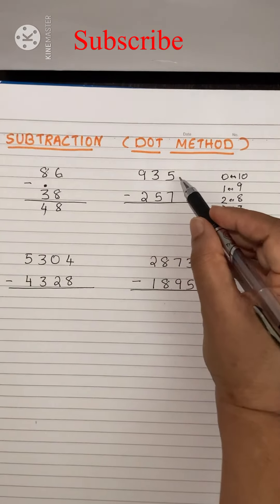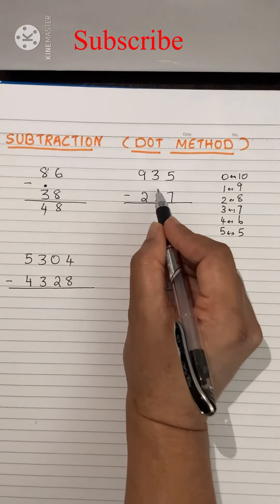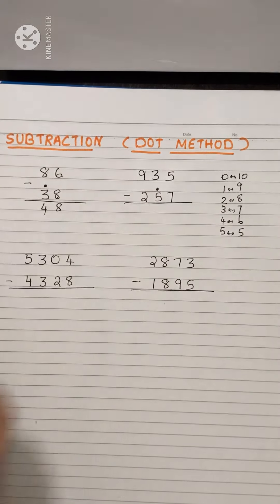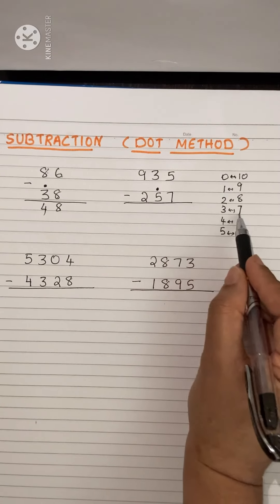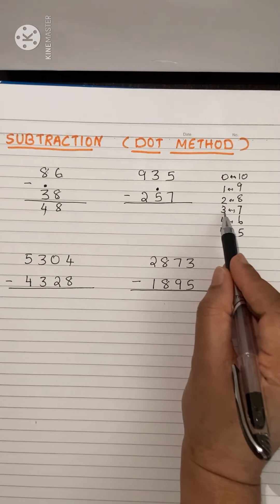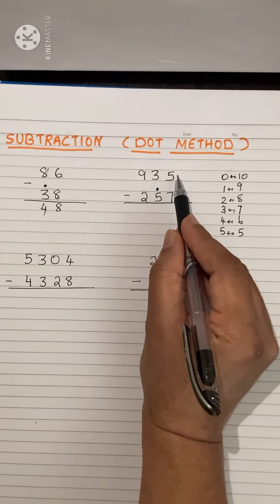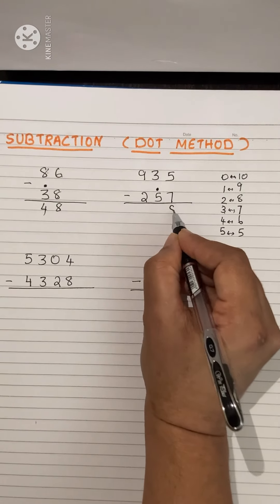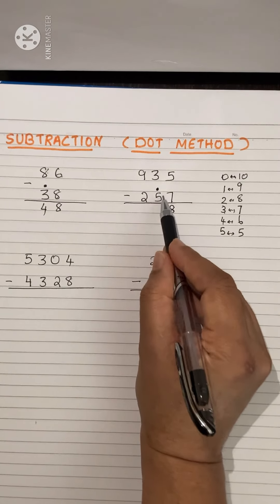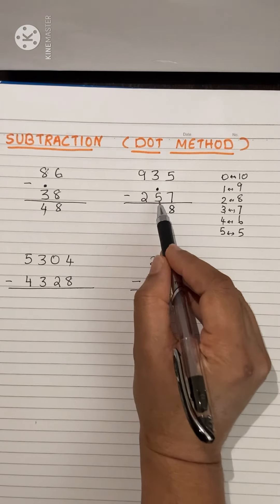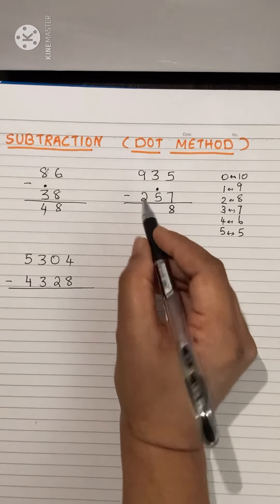The next one: here 5 and 7, not possible. So you have to put a dot here first. Now check 7 — which number is related to 7? It is 3. Add that 3 with 5: 5 plus 3 is 8. Next, this will become 6 — the 5 and the dot together make 6.